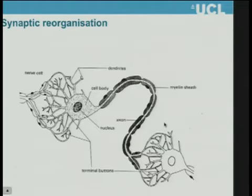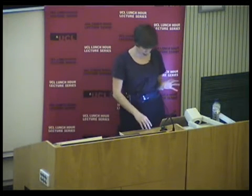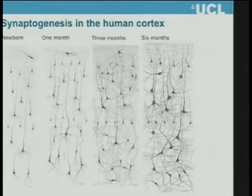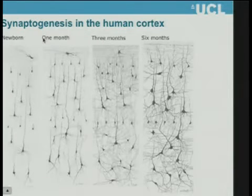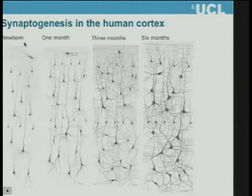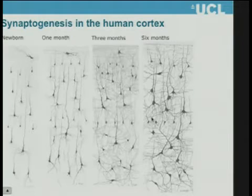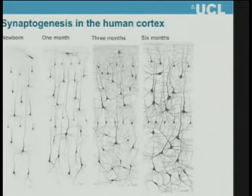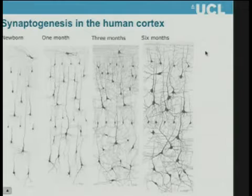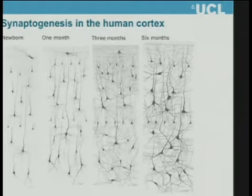Electrical signals are communicated via synapses, or connections between one neuron and other neurons. Synapses become reorganized starting from very early on after conception in all brain regions. Initially they undergo a period of synaptogenesis — the generation of new synapses — so the number of synapses massively multiplies in the first few weeks and months of life. This is a diagram from the cortex of human post-mortem brain tissue, starting from a newborn baby up to six months. You can see the number of connections — the dendrites, which look like branches of trees — massively multiplying in the first six months.